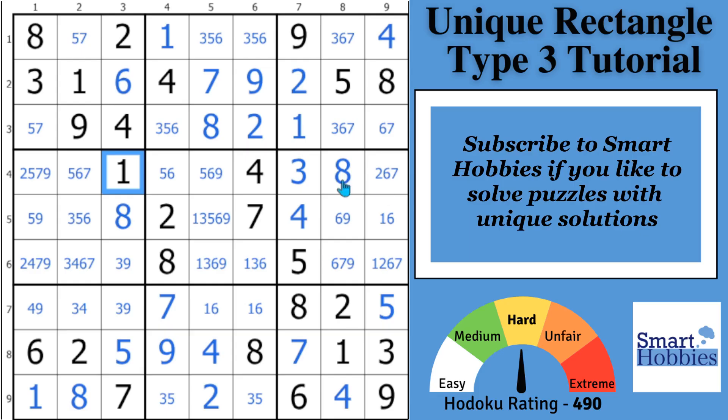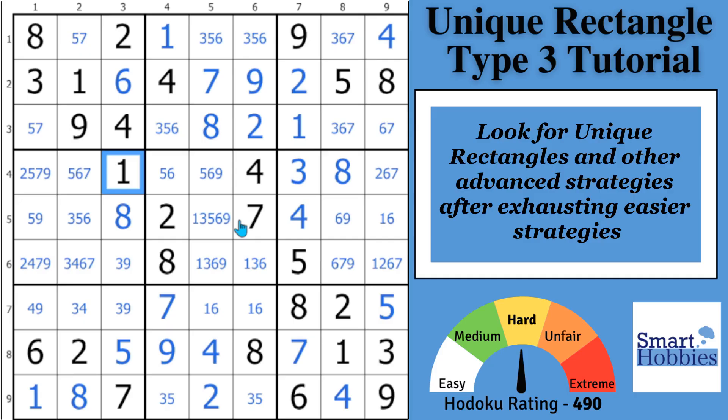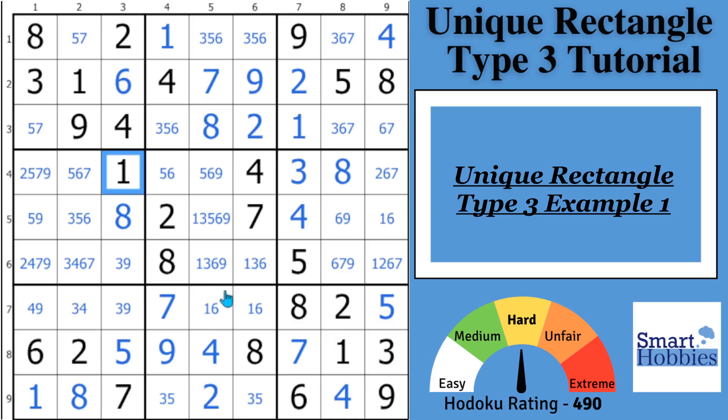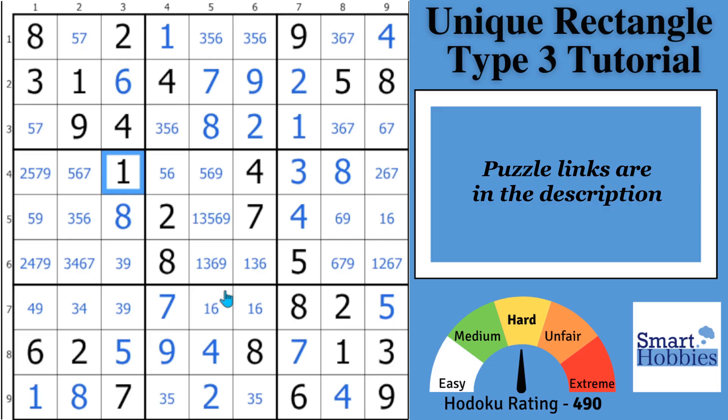The time to look for unique rectangles is after exhausting all easy and medium level strategies. In our first example, this is as far as you can solve without finding and using a unique rectangle type 3.